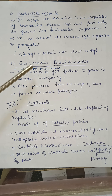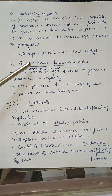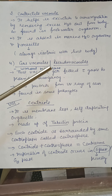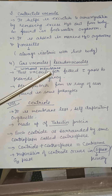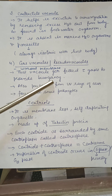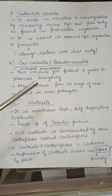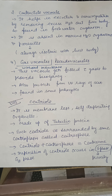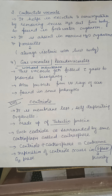Gas vacuoles or pseudo vacuoles are without any membrane and are found in prokaryotes. These vacuoles get filled with gases to provide buoyancy. They also protect the bacterial cell from UV rays of the sun.